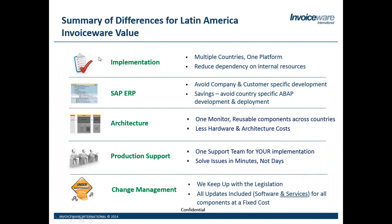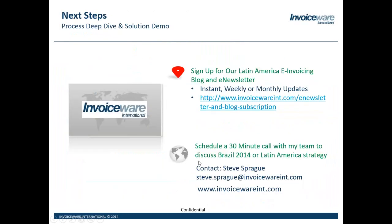Summary of our differences: Invoiceware supports multiple countries on one platform, reducing dependency on internal resources. The SAP hybrid cloud avoids having to deal with specific custom development, upgrades, and OSS notes — we absorb that. Simplified architecture: not four solutions with different middleware integrations and different SAP upgrade projects. Production support: one team for the end-to-end process. Call us in your local language — Spanish, Portuguese, English. And change management. These are the five values of what we bring.